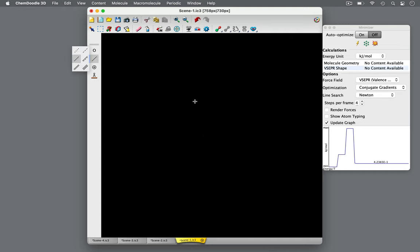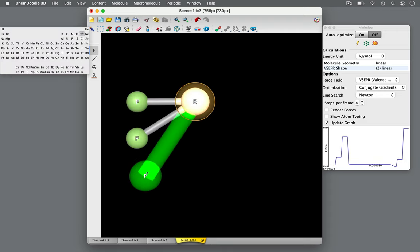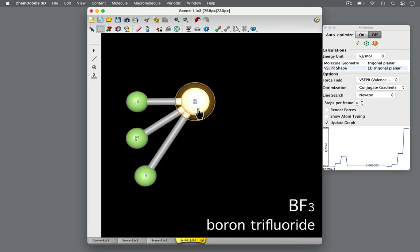Let's learn about VSEPR theory and molecules with three domains of high electron density about the central atom. Let's start with boron trifluoride. This molecule consists of a central boron atom with three fluorine atoms.